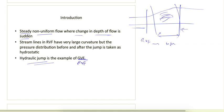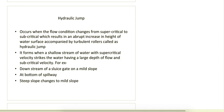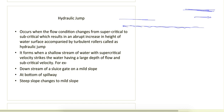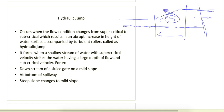Hydraulic jump occurs when flow condition changes from supercritical to subcritical, resulting in an abrupt increase in depth. If water is coming at very high velocity in supercritical flow and downstream there is a comparatively large depth in subcritical flow, when this water meets the subcritical flow it tries to achieve that height. In doing so, eddies form and it becomes a turbulent flow scenario — the wave which forms is called a hydraulic jump.